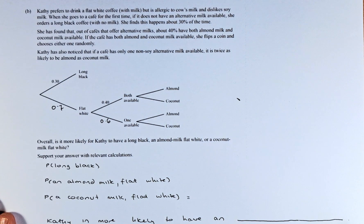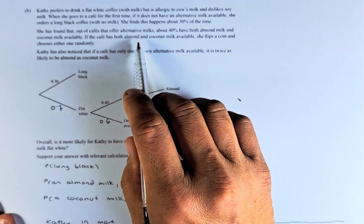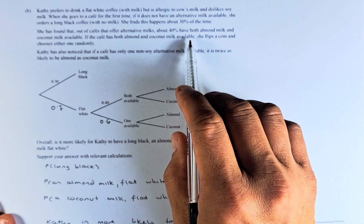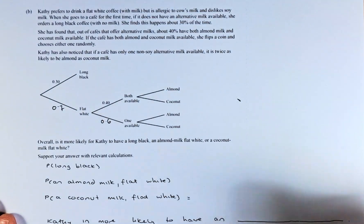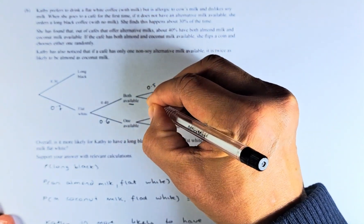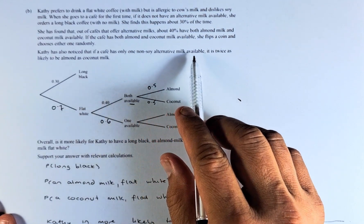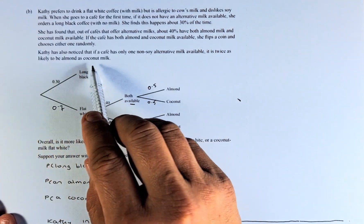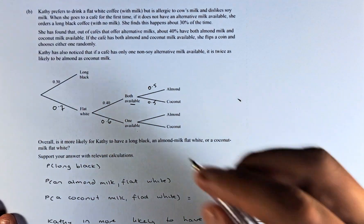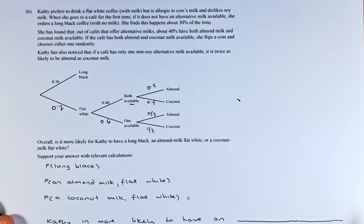Cathy also noticed that if a cafe has only one non-soy alternative milk available, it is twice as likely to be almond as coconut. If the cafe offers both coconut and almond milk, she flips a coin and chooses either one randomly. So if both are available, the chances are 0.5 and 0.5. If only one is available, it will be 2/3 for almond and 1/3 for coconut because it is twice as likely to be almond.